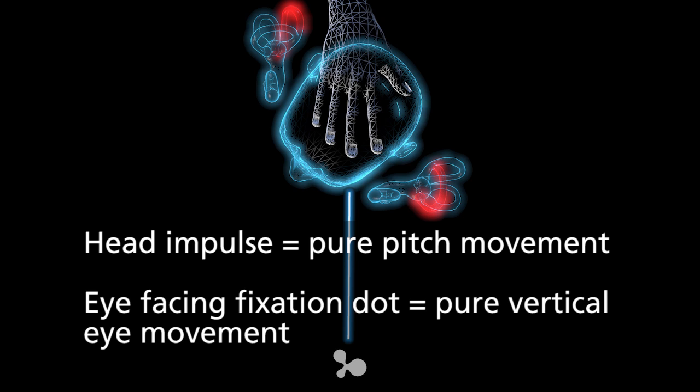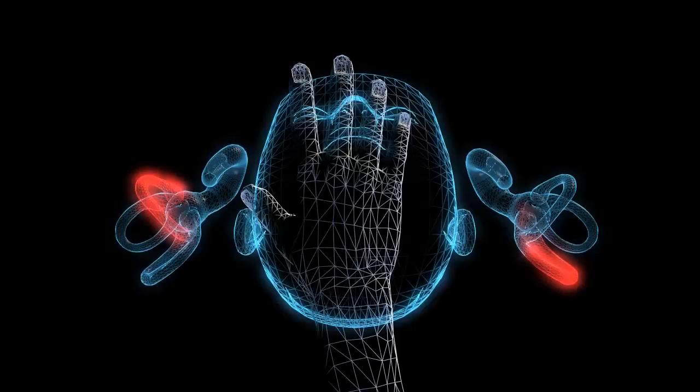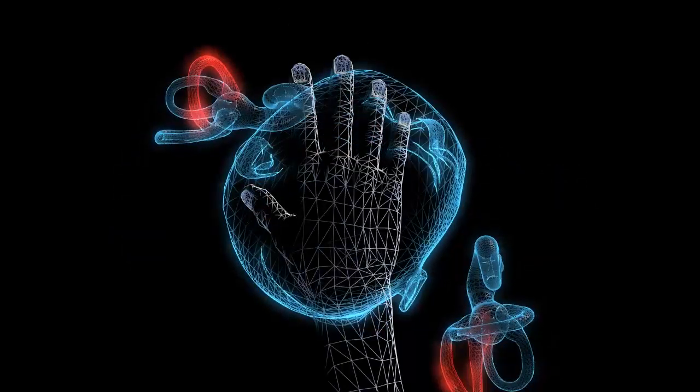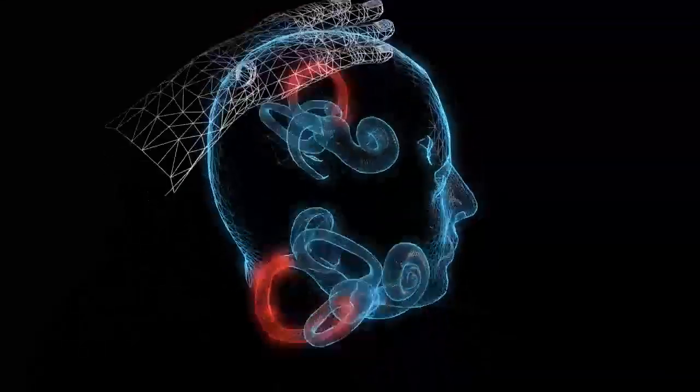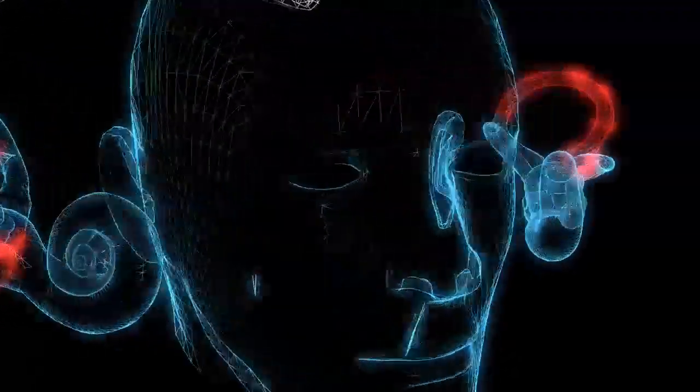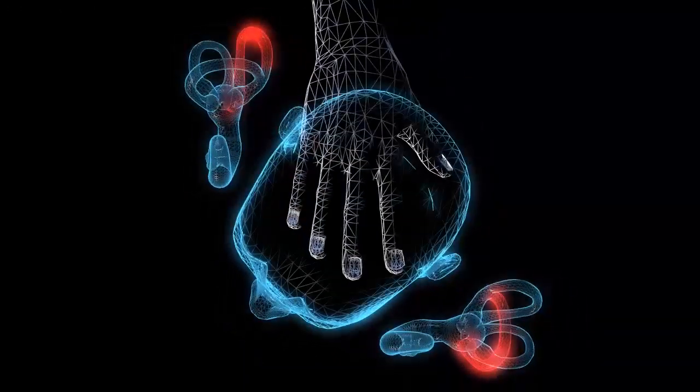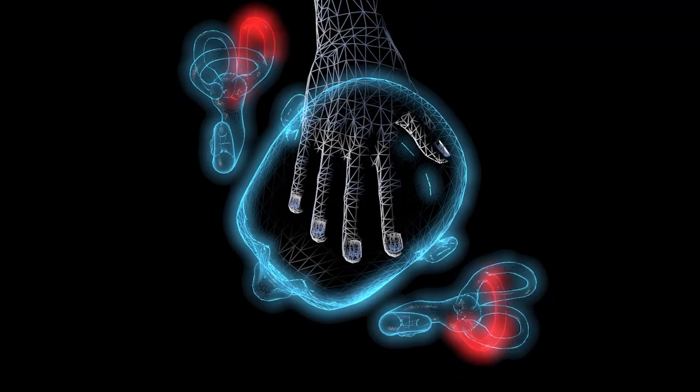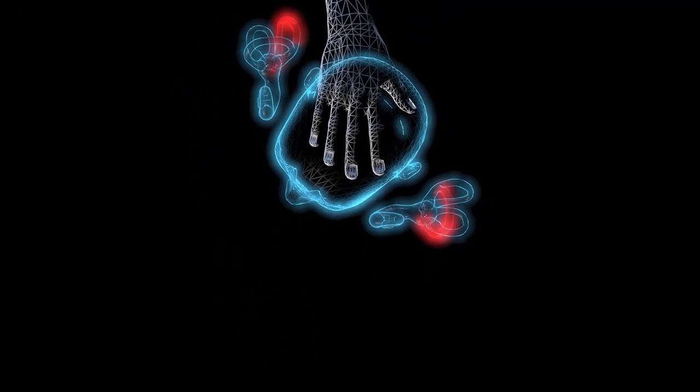The other thing is, if you had some torsional component in there, it could also affect your gain. So you want to make sure that you move the head 35 to 45 degrees to the right and that the patient is still staring back at the fixation dot.